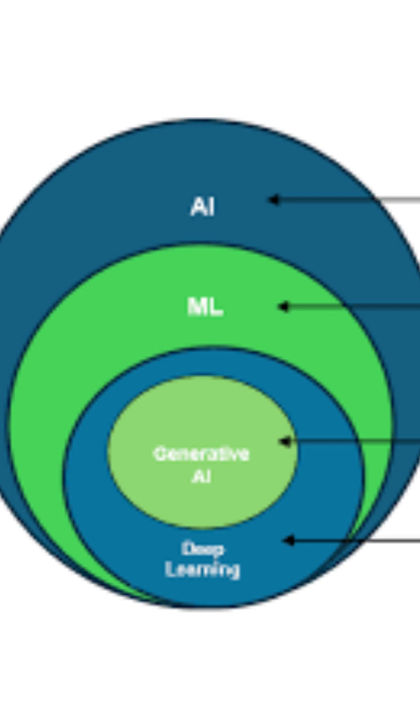So, remember AI is big brain and ML is how it learns and Generative AI is how it creates. Now, you know the difference between AI, ML and Generative AI.